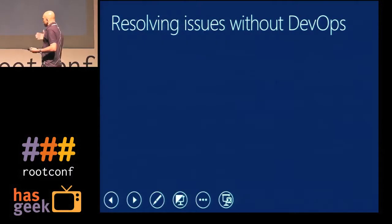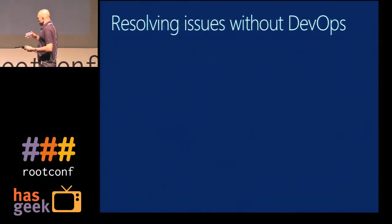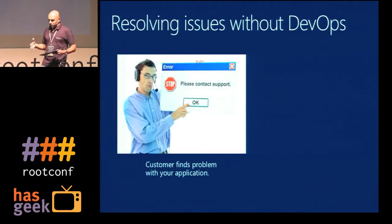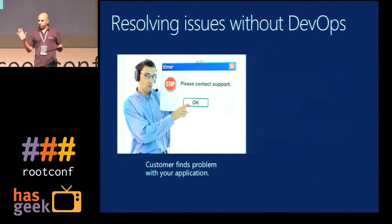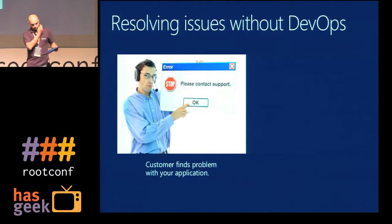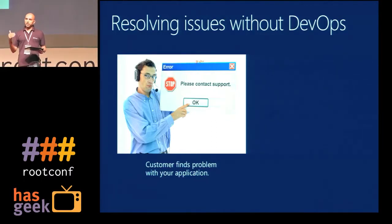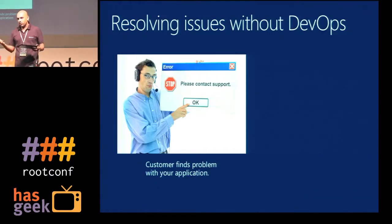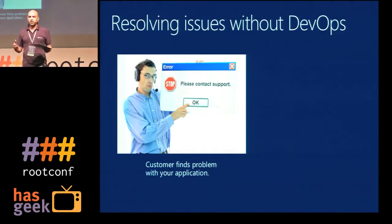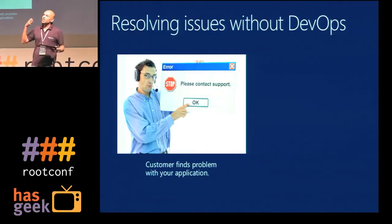If you think about the last couple of years, how we typically come across problems: either the customer reports a problem, or there are problems you never are even aware of. Typically how issues used to be reported is either the customer reports a problem through a feedback mechanism, or in many times you never even get to know there was a problem because you just lose the customer. Or if it's an e-commerce site, there are times you don't even get to know because there is no feedback mechanism implemented in the system.